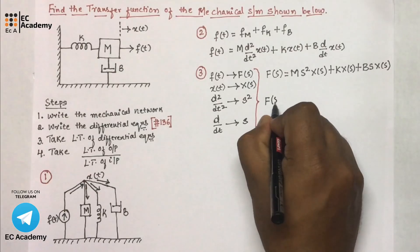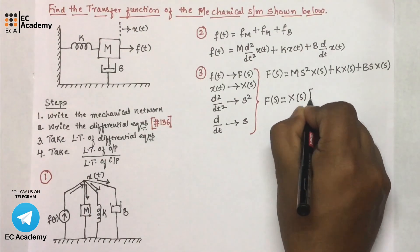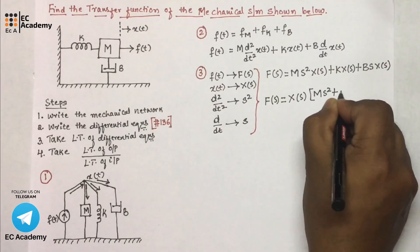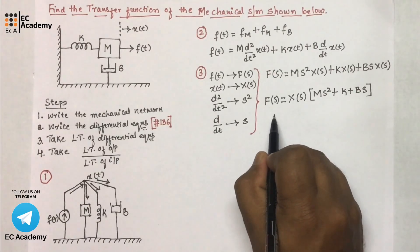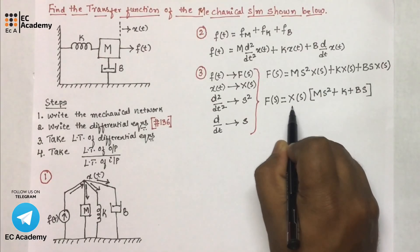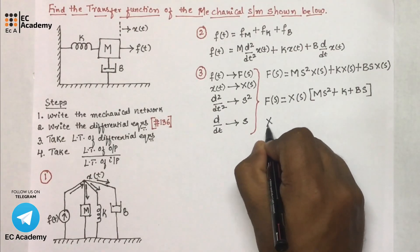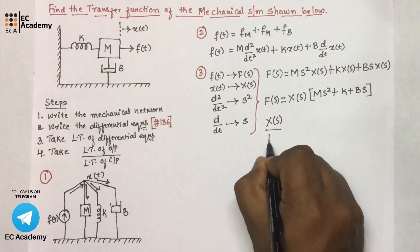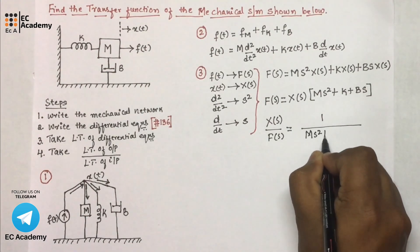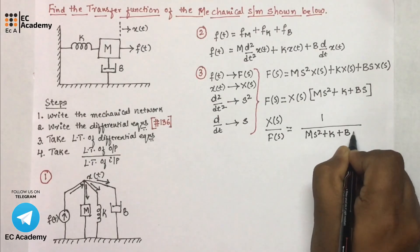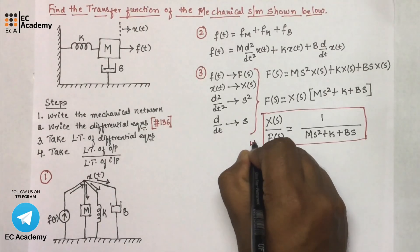Taking X(s) as common, we have F(s) = X(s)·(ms² + bs + k). Now we find the transfer function, which is the ratio of the Laplace transform of the output to the Laplace transform of the input. So the transfer function is X(s)/F(s) = 1/(ms² + bs + k). This is the transfer function of the given mechanical system, which is step number 4.